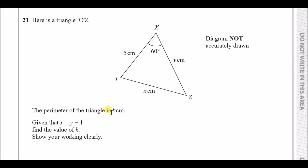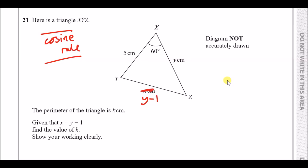Okay, number 21. The perimeter of triangle XYZ is k, so five plus y plus x equals k. Given that x equals y minus one, find the value of k. We can replace x with y minus one. Now we have three lengths and an angle, so we're going to use the cosine rule — it's always a choice between cosine and sine, but here it's cosine.